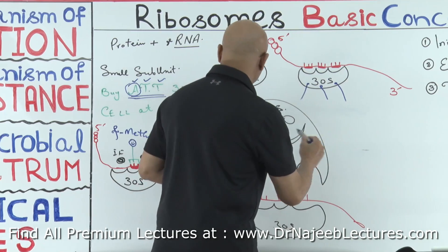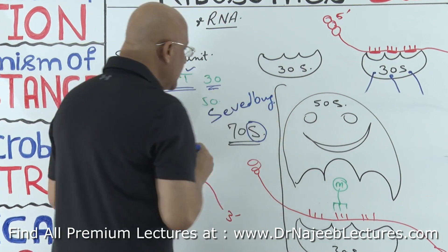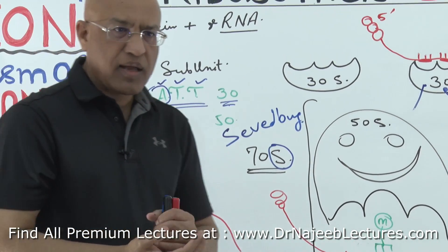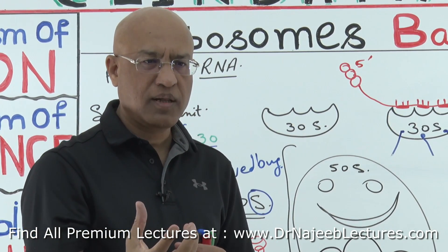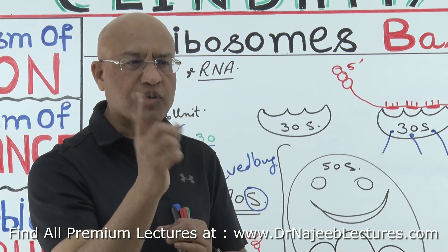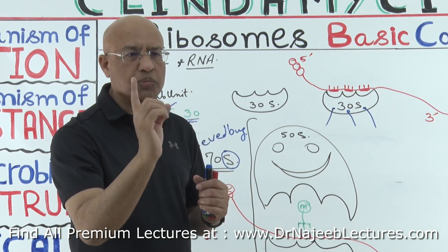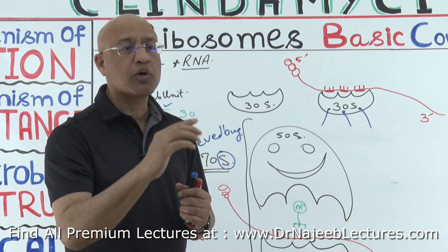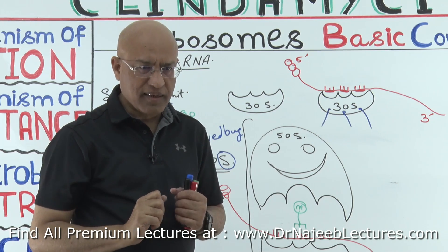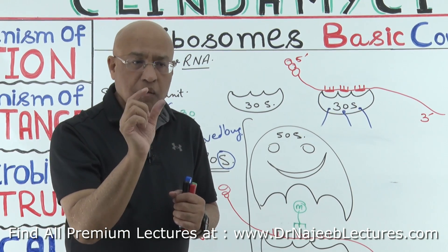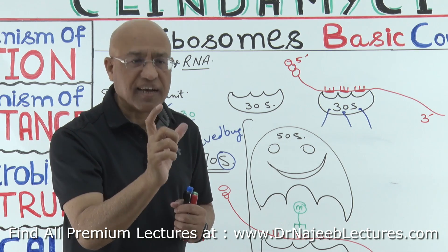S stands for the Svedberg unit. These are units that determine the rate of sedimentation of ribosomes in a centrifuge. The rate of sedimentation is determined by the molecular weight and mass of the ribosomal unit. The 30S is the smaller unit and has a slower rate of sedimentation, while the 50S is the bigger unit with a faster rate.